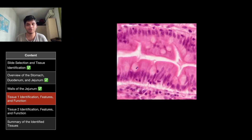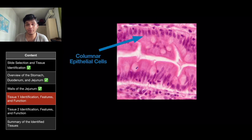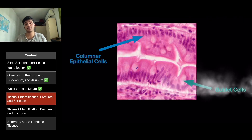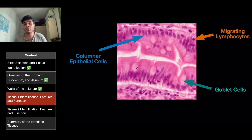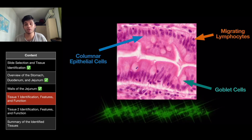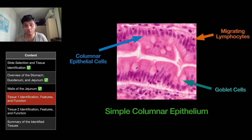For tissue one, we have identified three cells. The first were columnar epithelial cells, mainly used for absorption of digested food nutrients. The second were goblet cells, used for secretion of mucus. The third were migrating lymphocytes, for defense and immune purposes. Therefore, tissue one is simple columnar epithelium.